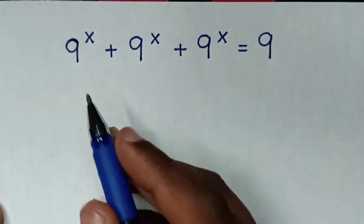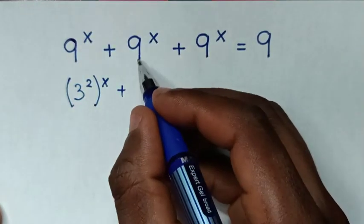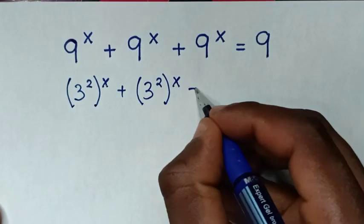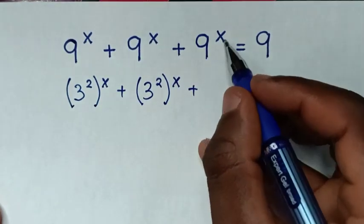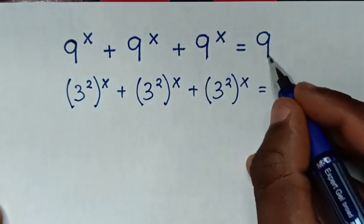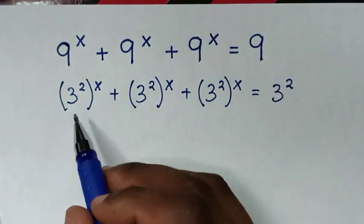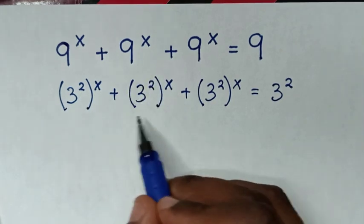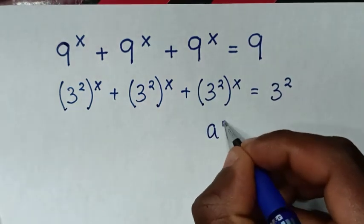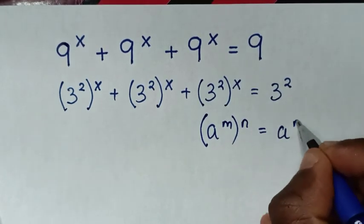From 9 power x, 9 is the same as 3 squared, so we write (3²)^x for each of the three terms, giving us (3²)^x plus (3²)^x plus (3²)^x is equal to 9, where 9 is also the same as 3 squared. We apply the exponential rule that a power m, bracket power n, is equal to a power of m times n.